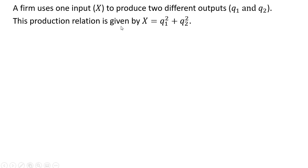This production relation is given by the following: input x, the quantity of input x, equals the output of good 1 squared plus the output of good 2 squared.